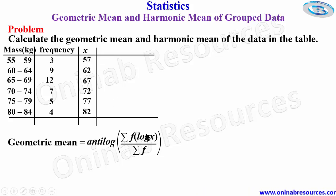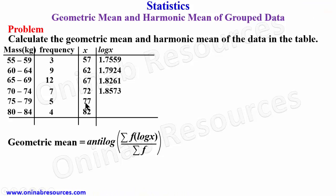So the next thing now is we find the logarithm of x. We create another column log x. The logarithm to base 10 of 57 gives 1.7559 to 4 decimal places. Logarithm of 62 to base 10 is 1.7924. Logarithm of 67 to base 10 gives 1.8261. Logarithm of 72 to base 10 gives 1.8573. Logarithm of 77 to base 10 gives 1.8865. And finally logarithm of 82 to base 10 gives 1.9138.